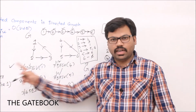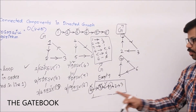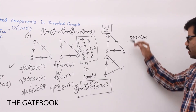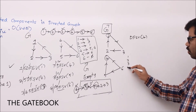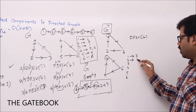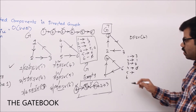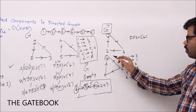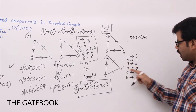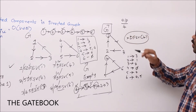Now we call DFS on G transpose in the order 4, 5, 6, 1, 2, 3. The adjacency list of G transpose is: 1's neighbor is 3; 2's neighbor is 1; 3's neighbor is 2; 4 has no neighbors; 5's neighbor is 4; 6's neighbors are 4 and 5. When DFS is called on 4, vertex 4 has no neighbors, so it immediately closes. Output: {4} is one component.